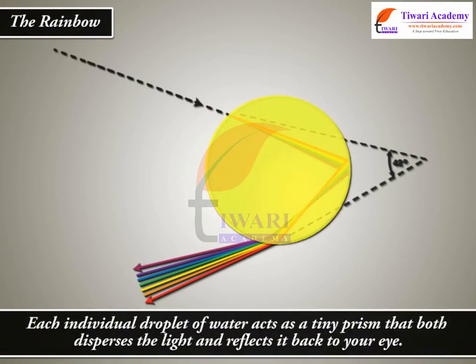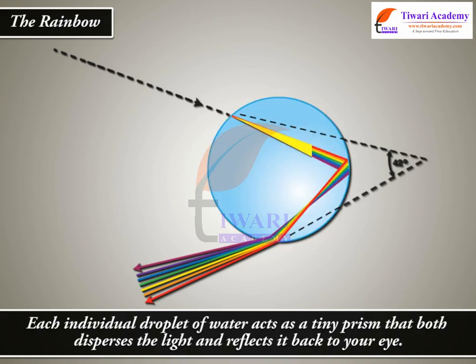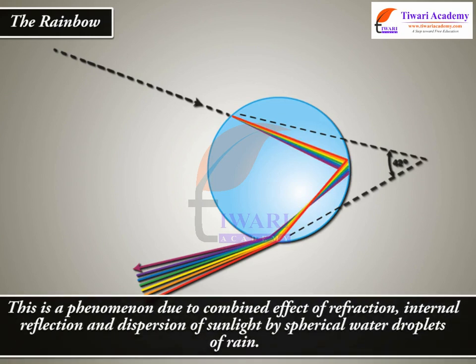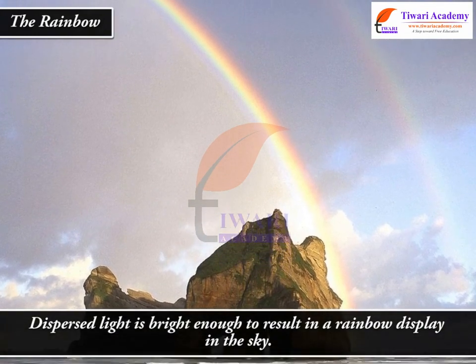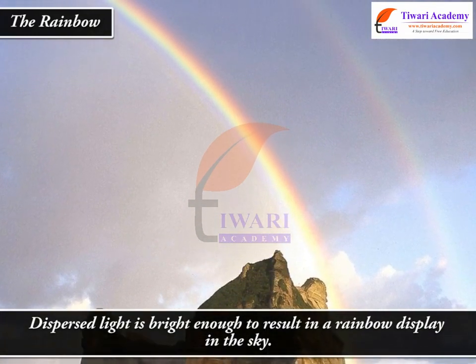Each individual droplet of water acts as a tiny prism that both disperses the light and reflects it back to your eye. This is a phenomenon due to the combined effect of refraction, internal reflection, and dispersion of sunlight by spherical water droplets of rain. Dispersed light is bright enough to result in a rainbow display in the sky.